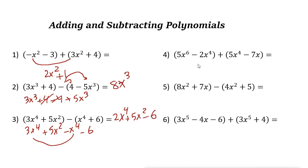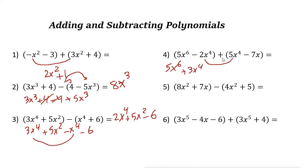This next one is addition, so first find the like terms. There's no other term with degree 6, so just write down 5x⁶. Then negative 2x⁴ and 5x⁴ are like terms — combining those gives plus 3x⁴. And minus 7x has no other x term to combine with.